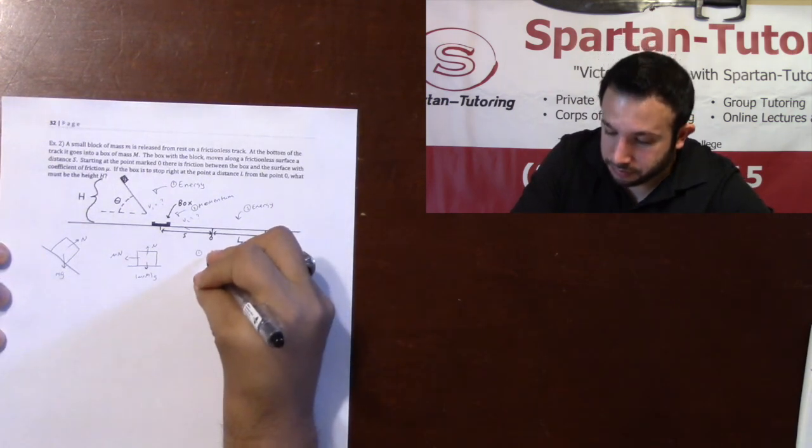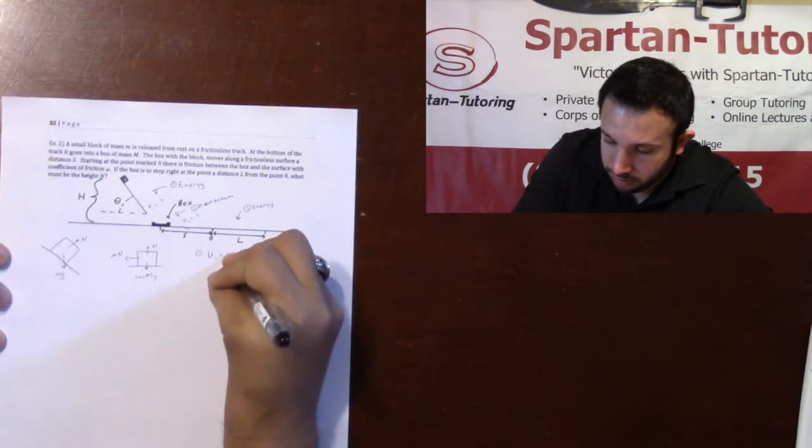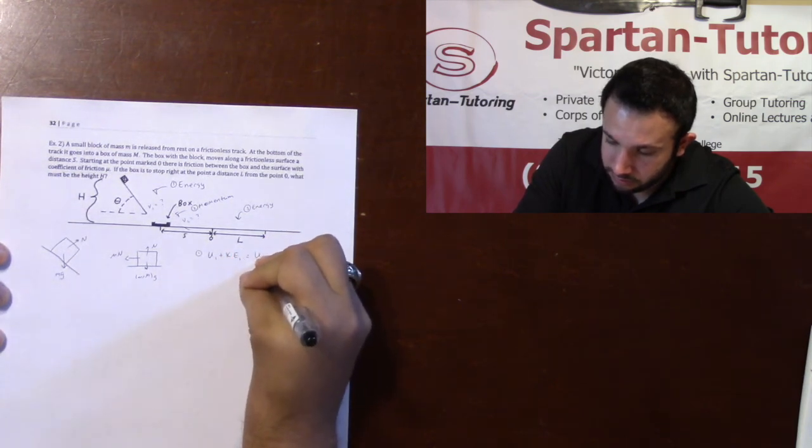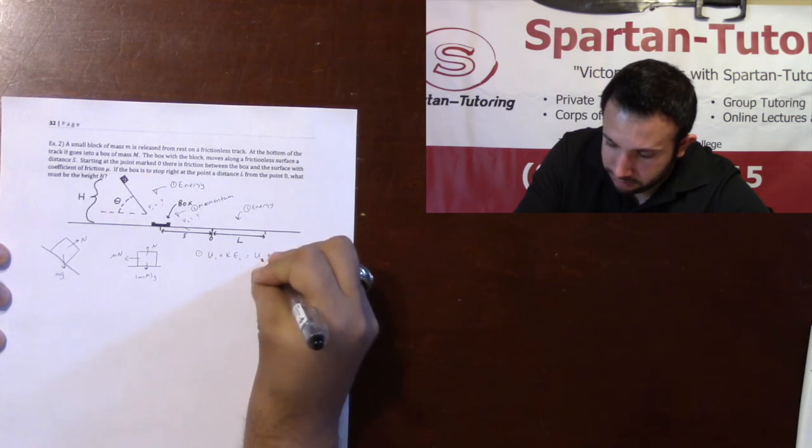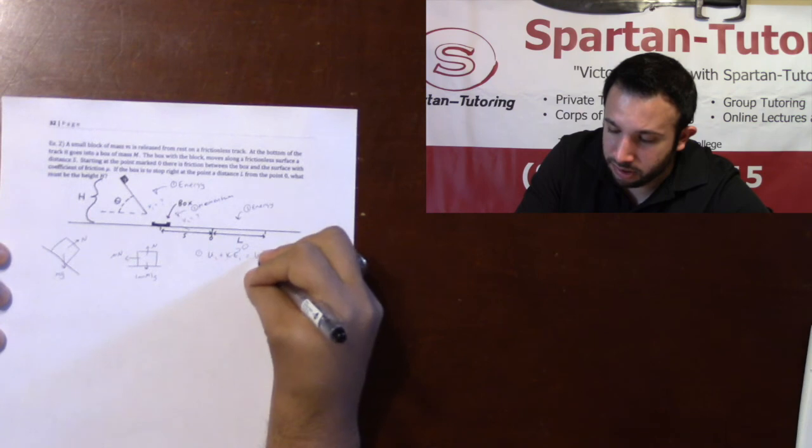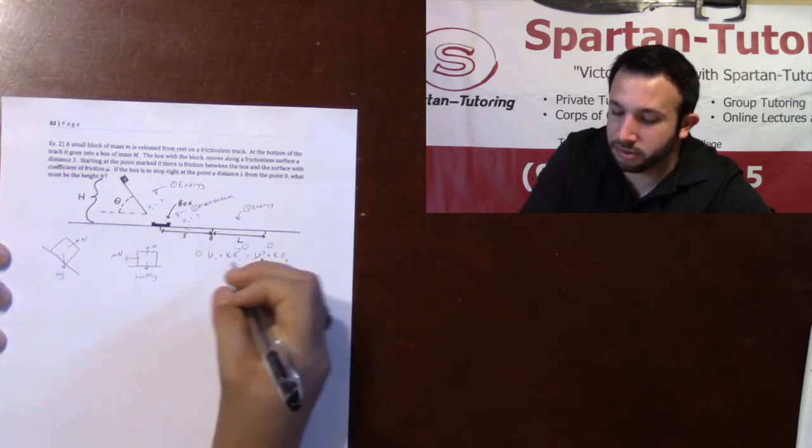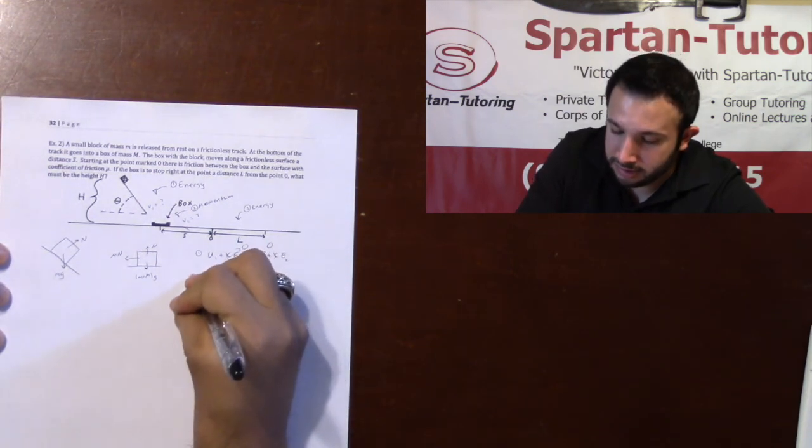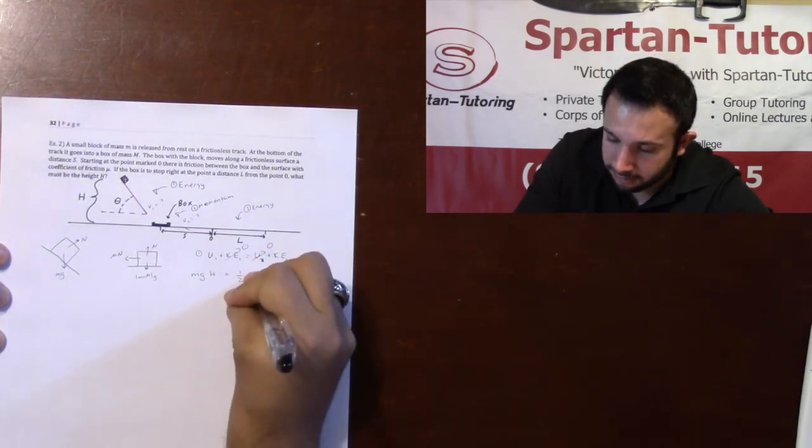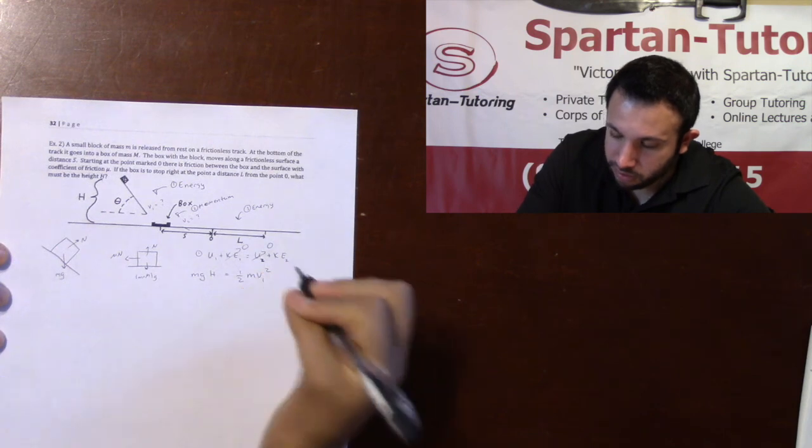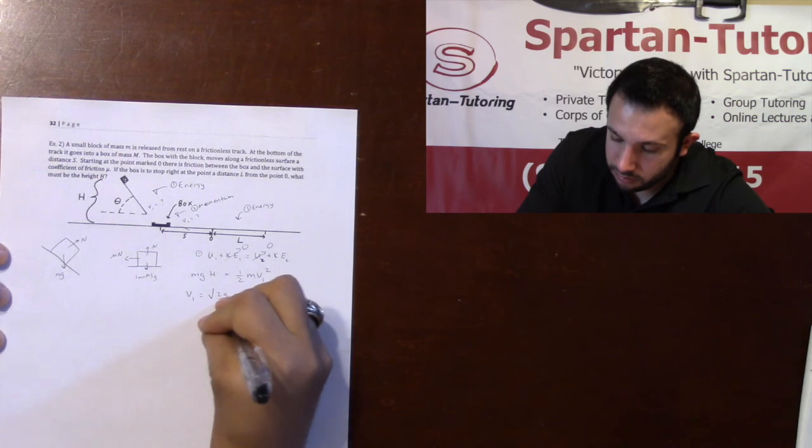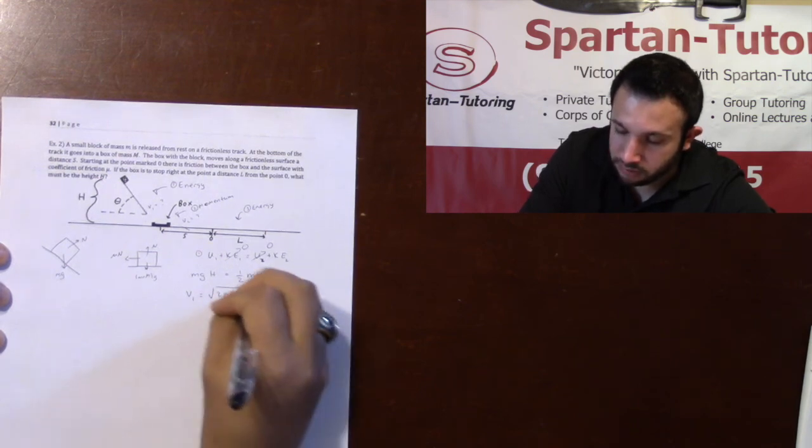And so first, we know that our initial energy is equal to our final energy. But we know initially kinetic was zero. At the end, potential was zero. And so we would just set the MGH equal to the 1/2 MV1 squared. And what I get is that V1 is equal to the square root of 2GH.